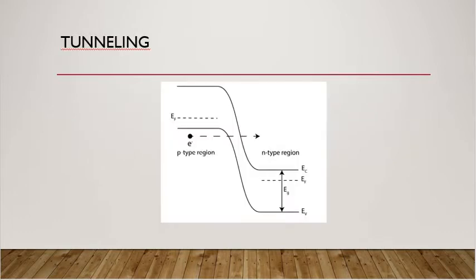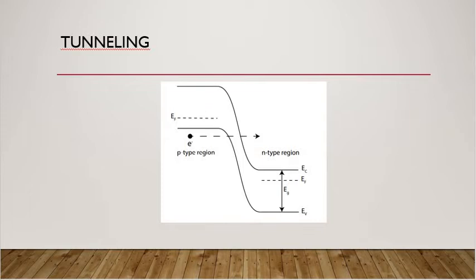Now, starting with tunneling: you can see the conduction and valence bands, with a p-type and n-type region. There is a band gap difference between them, but due to a high electric field or high doping, the bands come near to each other. When that happens, tunneling occurs — electrons tunnel from the valence band to the conduction band, or from the conduction band to the valence band. To simulate this, you have to define some syntax.